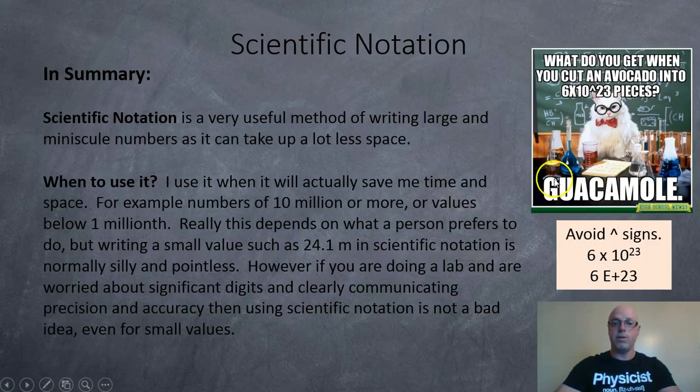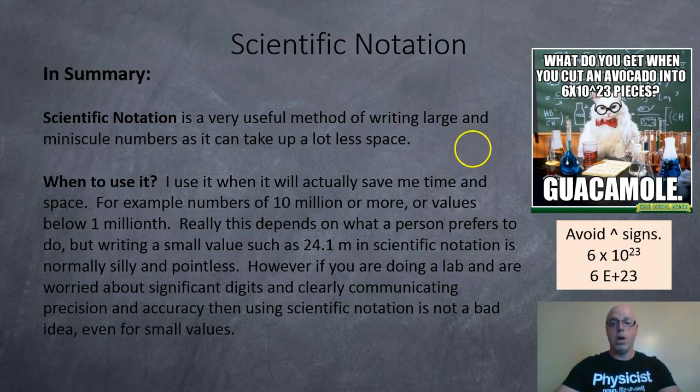Okay, so in summary, it's a very useful method of writing large and miniscule numbers, as it takes up a lot less space sometimes. When to use it? Well, I only use it when it's actually going to save me some time and space. So numbers over 10 million or below a millionth. But it depends on what you're comfortable with. In a lab experiment where you're really worried about communicating clearly how many significant digits you have or how precise or accurate your values are, then you may wish to use scientific notation even for small values.